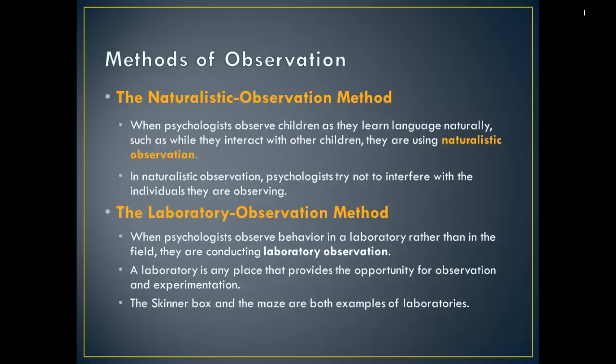Sometimes observing people or animals is not practical in a natural setting. For example, to observe infants' reactions to a mirror image of themselves and record those reactions with a camera behind the mirror, you'd need to bring infants into a laboratory. This allows control over the number of infants, their ages, and everything else in the lab. The disadvantage is that it's an artificial situation that might produce artificial behavior — both animals and people react differently in labs than in the real world. The main advantage is a good degree of control. The Skinner box, with three solid sides and one of glass, is an example of laboratory observation.